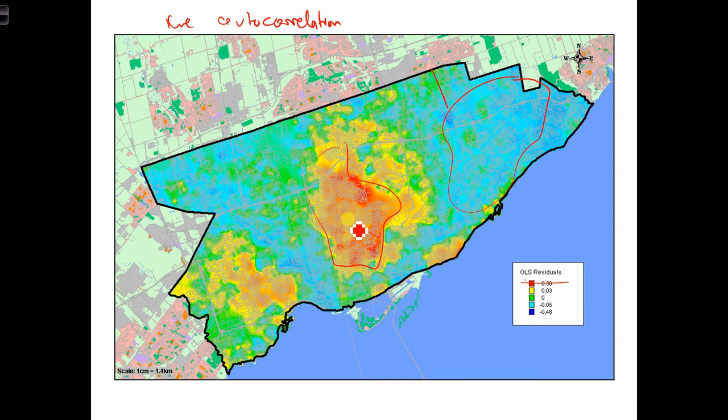This is evidence that we are committing a violation of the assumption of independence, and therefore our regression analysis conducted on this data set is biased, and we have a false sense of confidence about how good our model is.